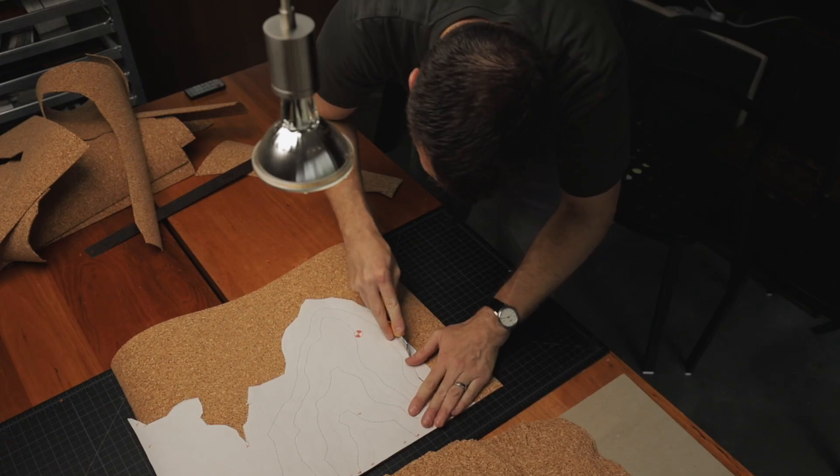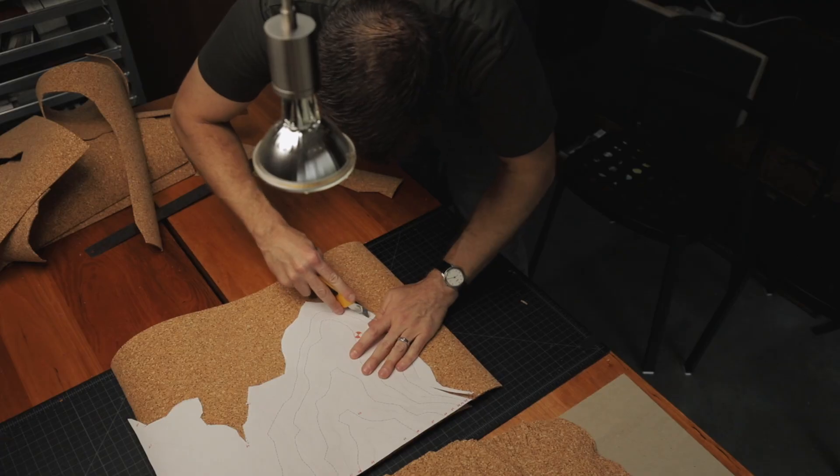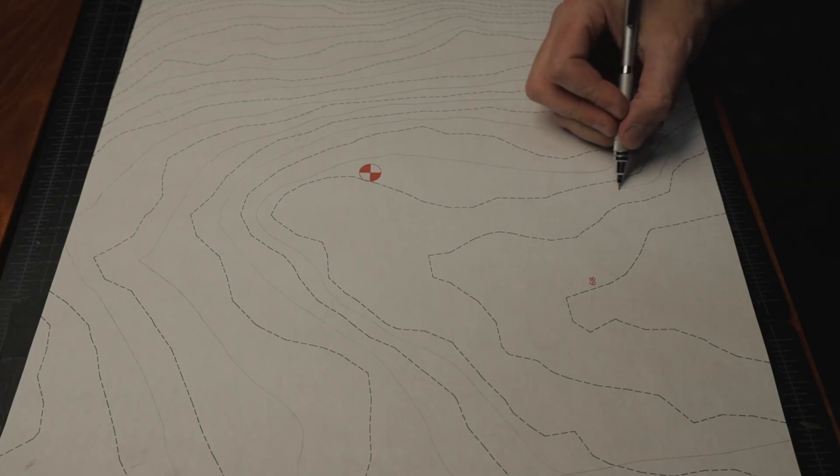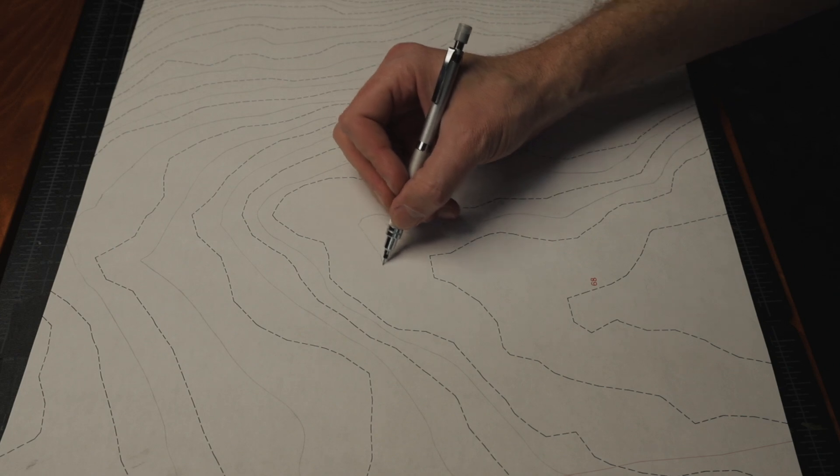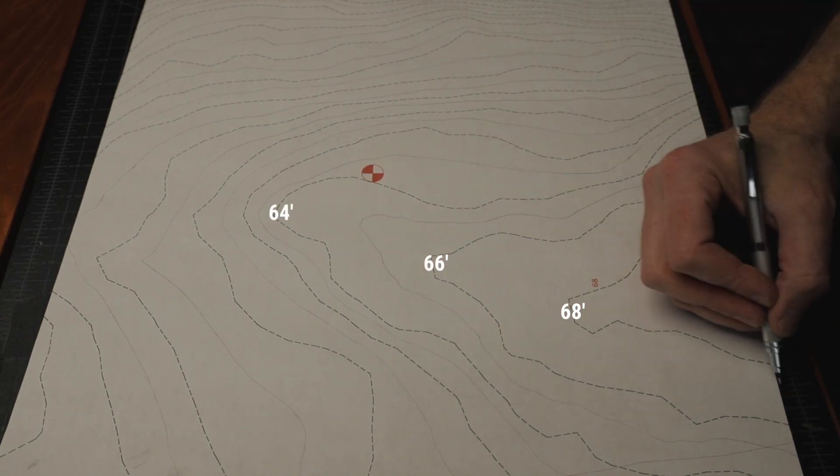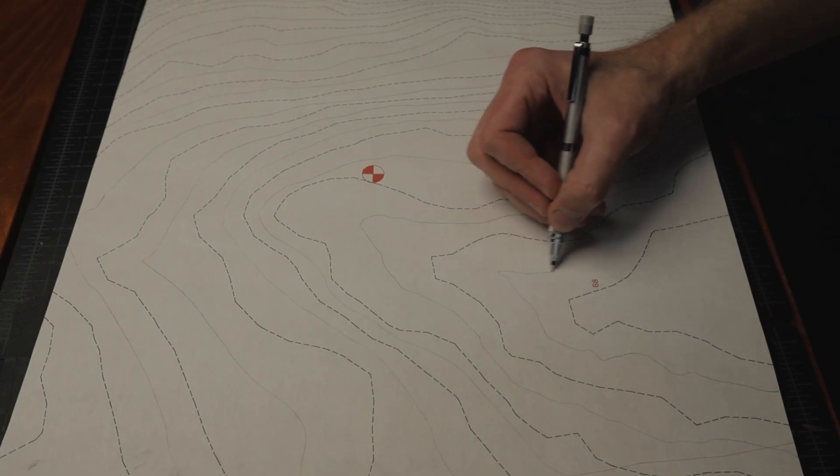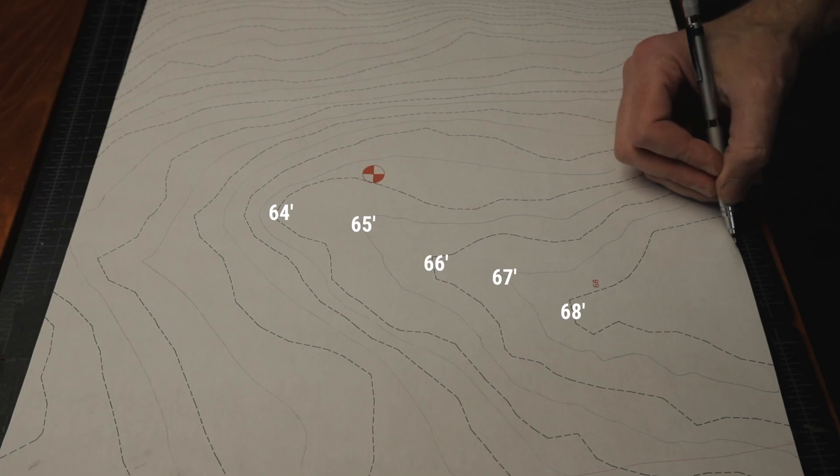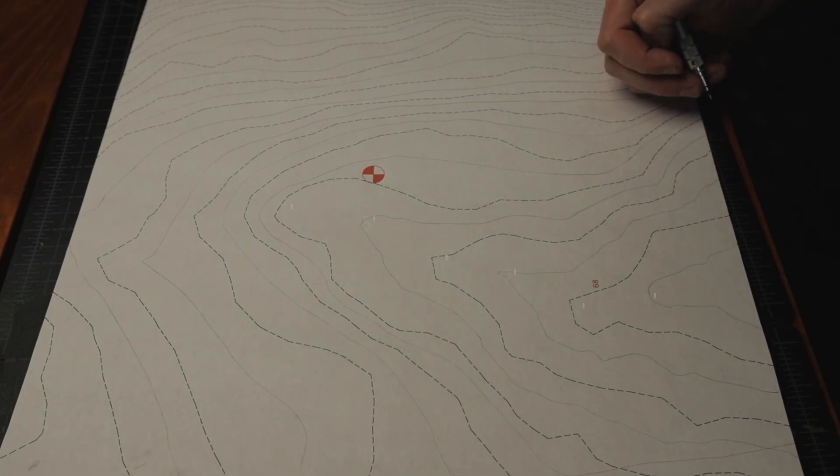The dark dashed lines are what I received from the survey and then the pencil lines I interpolated between that. The dark black lines represent a two-foot contour. This cork is the thickness of one foot, so I needed to interpolate between the two.